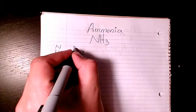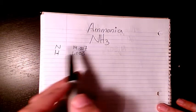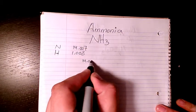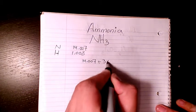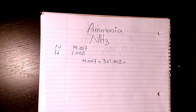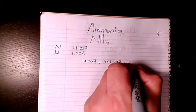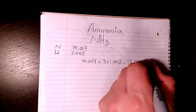We have one atom of nitrogen and three atoms of hydrogen, so it's going to be 14.007 plus three times 1.008. That's going to be 17.031 grams per mole.